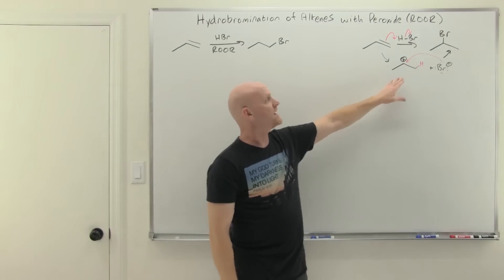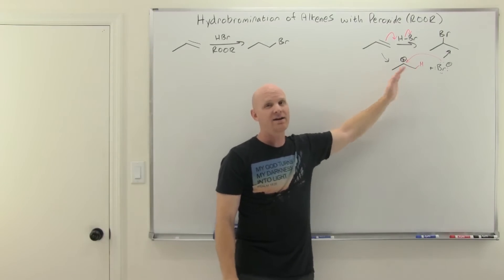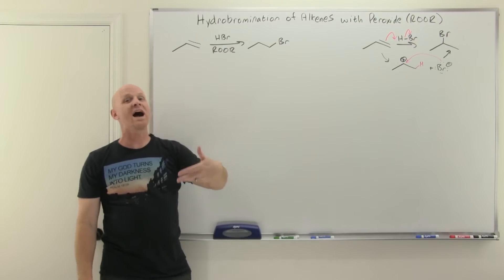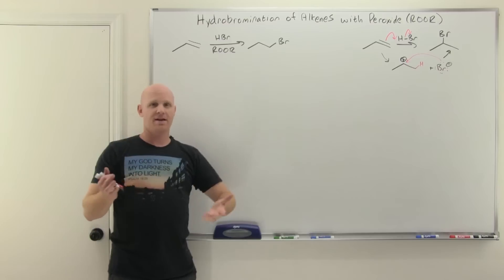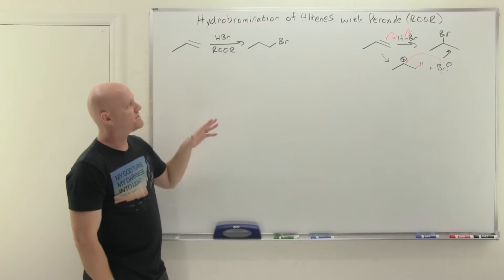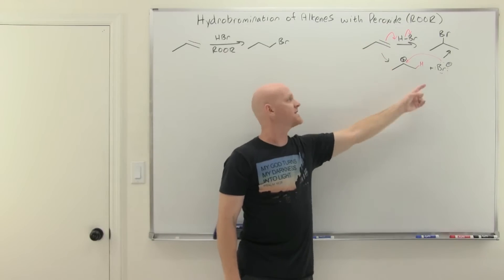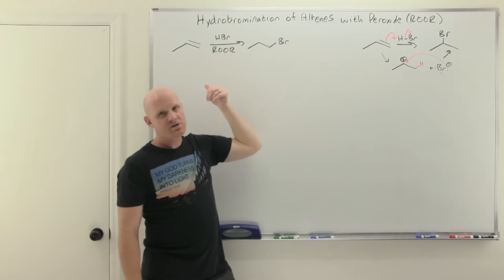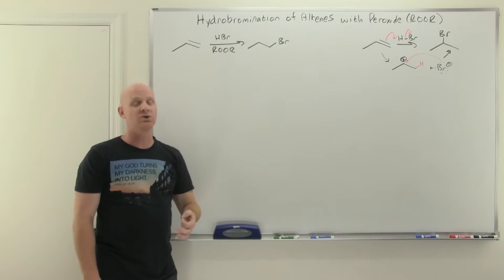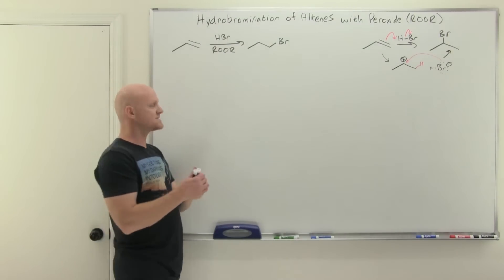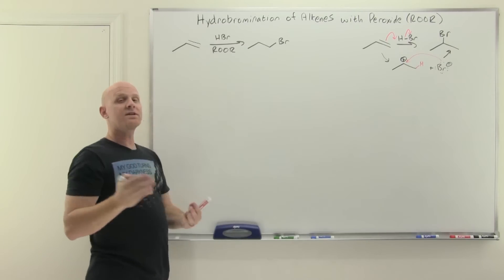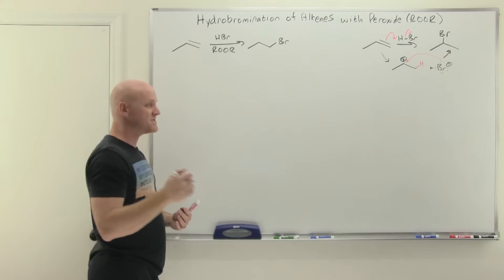The same thing is going to happen here. Instead of getting a more-stable, more-substituted carbocation, here it's going to be about getting a more-stable, more-substituted carbon radical. Carbocations and carbon radicals follow the same trend: more-substituted, more-stable. So the first thing to react with the alkene when using HBr with peroxide is going to be a bromine radical, and it ends up on the less-substituted side. We're going to start in the propagation steps.